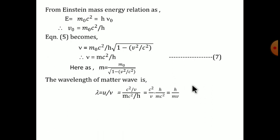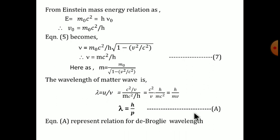Using the definition of wavelength lambda equals velocity divided by frequency, we substitute u equals c-squared over v and nu equals m c-squared over h. Simplifying numerator and denominator, the wavelength of the matter wave becomes lambda equals h divided by mv. This can also be written in terms of momentum as lambda equals h divided by p. This is the de Broglie relation for matter waves.